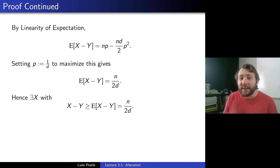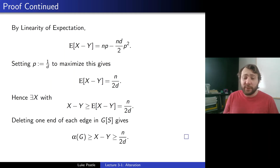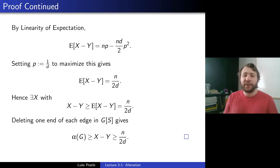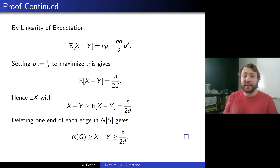There must exist an outcome where X minus Y is at least its expectation N over 2D. Y is the number of edges in G[S], so from each edge, arbitrarily pick one endpoint and delete it. What remains has size X minus Y and is an independent set. So α(G) is at least X minus Y, which is at least N over 2D. That's a nice use of alteration: take a random set, it might not be independent, delete one endpoint from each edge, and the resulting set is a large independent set.